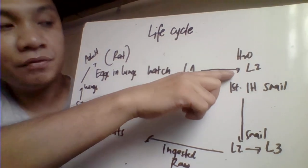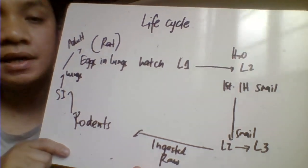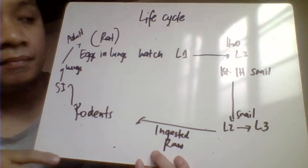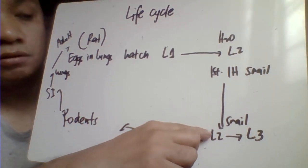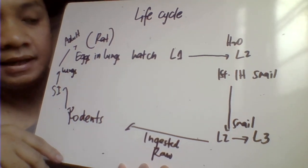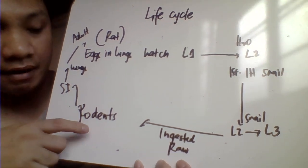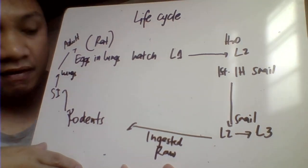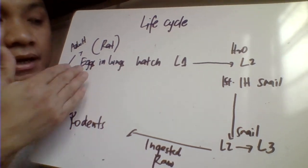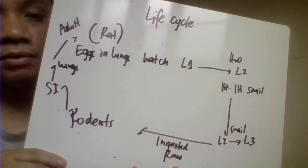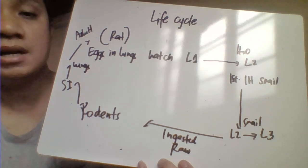The L1 transforms to become L2, the second-stage larva. The L2 is then taken up by the first intermediate host, the snail, where it transforms to become L3. When rodents like rats ingest the snail containing L3, they become infected. The L3 third-stage larva goes to the intestinal tract, migrates up to the pulmonary lungs, its final habitat, where it transforms to become adult worms and the cycle continues.